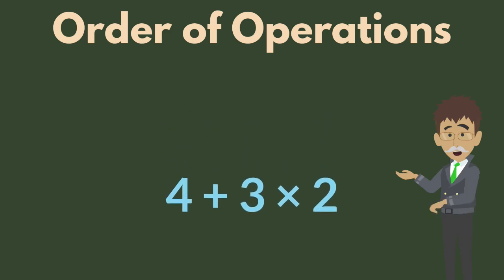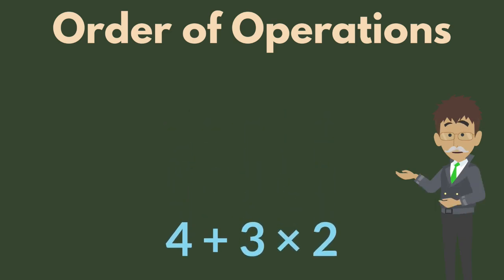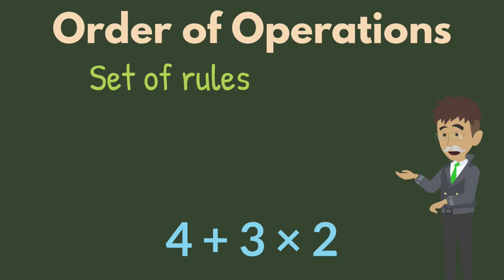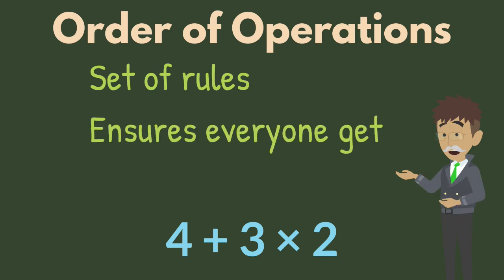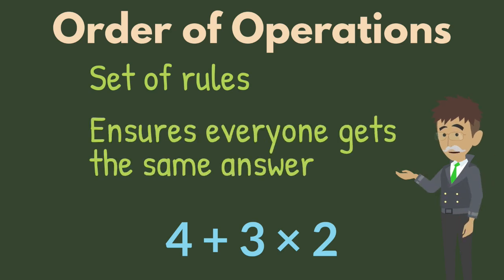The order of operations is a set of rules that tells us the correct sequence to solve mathematical expressions when there is more than one operation. This rule ensures that everyone solving a math problem will obtain the same correct solution.